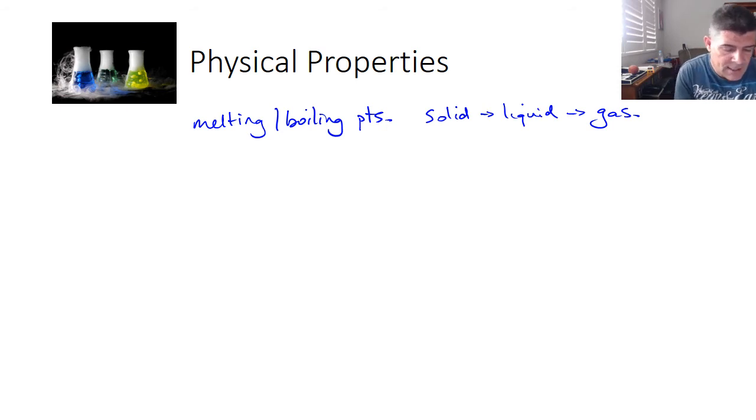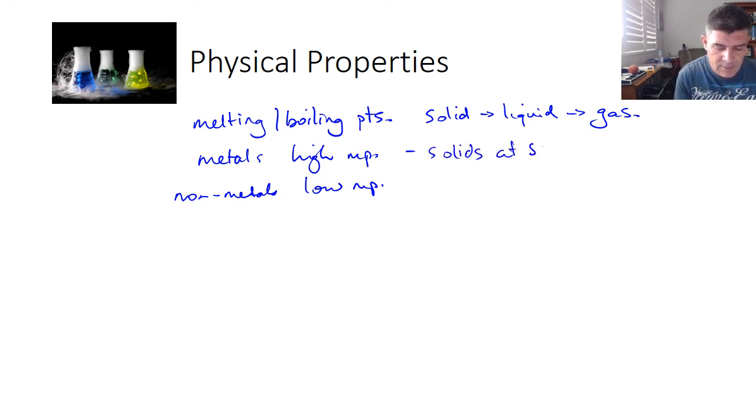Now what we find is our metals, generally speaking, have quite high melting and boiling points, but our non-metals have low. That means that we find most metals as solids at room temperature, at standard laboratory conditions, but most non-metals are gases under the same conditions.